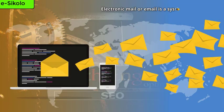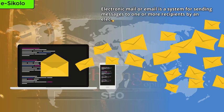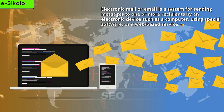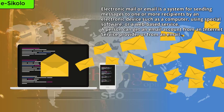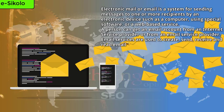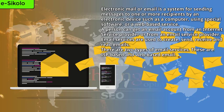Electronic mail or email is a system for sending messages to one or more recipients by an electronic device such as a computer, using special software or a web-based service. A person can get an email account from an internet service provider or from an email service provider. Email services are used to create, send, receive, and read emails. There are two types of email services: ISP-based and web-based email.